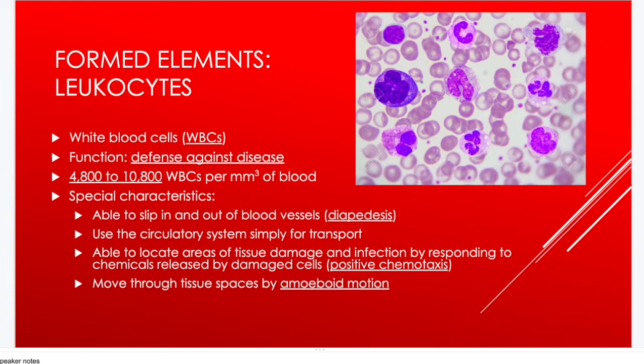White blood cells can locate damaged tissue or infection — for example, when viruses rupture cells, chemicals are released that attract WBCs to that area, a process called positive chemotaxis. Their ability to move through tissue spaces is called amoeboid motion, allowing them to squirm between cells to reach and hopefully defeat invading infections.